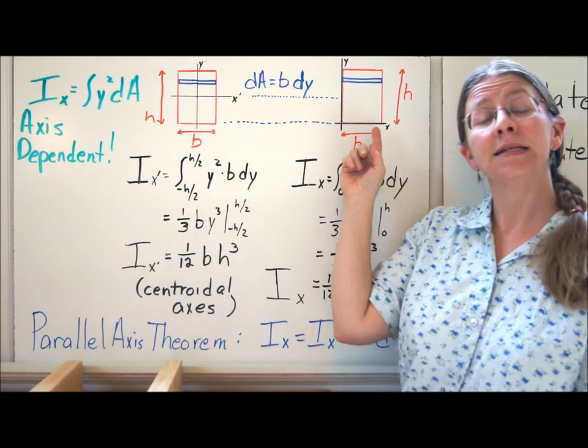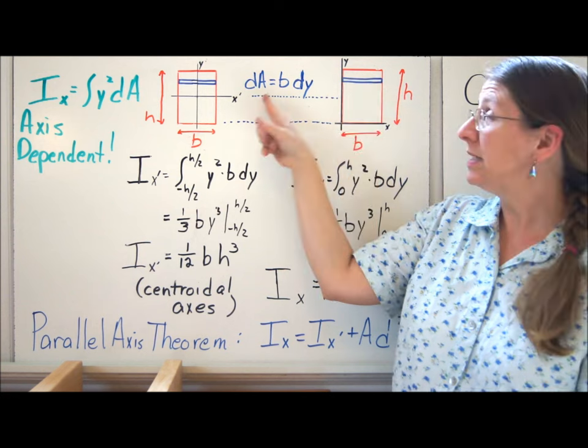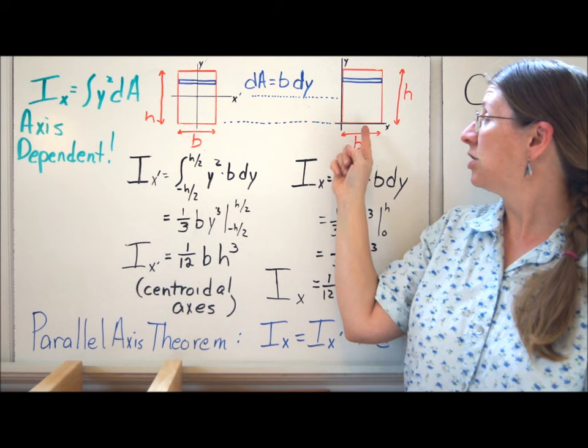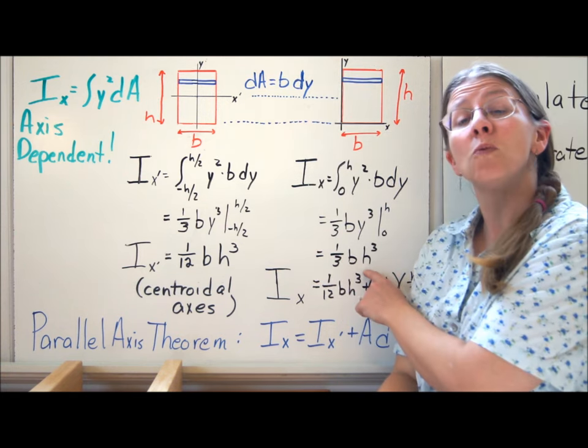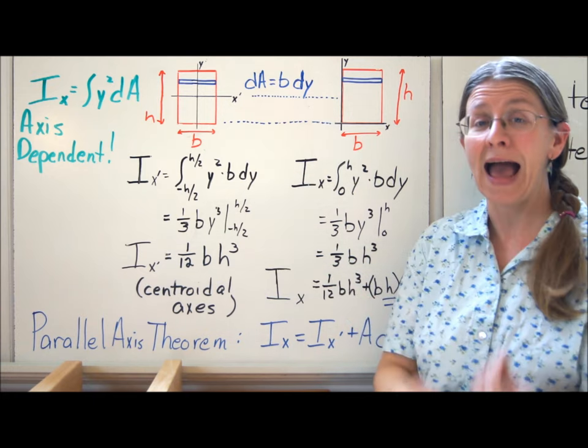If, on the other hand, I have axes that are on the baseline, then I have the same dA, b dy. But my limits of integration are different. My limits of integration go now from y equals 0 to y equals h. That gives me 1 third bh cubed, which is not the same here. The axes matter.